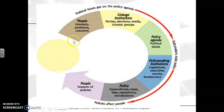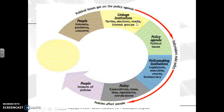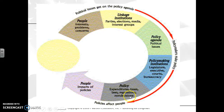When looking at linkage institutions, it's important to know this chart. People have interests — whether it's college funding or getting a stop sign built on your local road — and those issues are going to be conveyed through linkage institutions: parties, elections, media, and interest groups. When a politician gets elected through the political parties, those people's issues can be made into laws, going through your three main branches of government. If successful, it will become policy impacting the people. It does take a lot to change policy, but what connects people to the agenda is the linkage institutions.